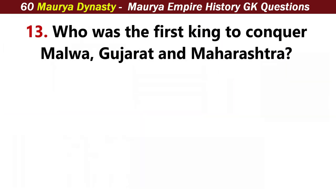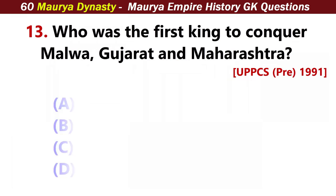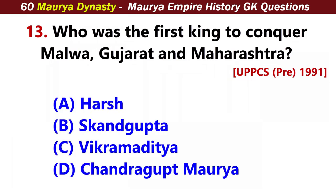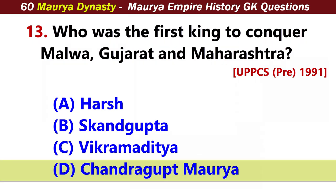Who was the first king to conquer Malwa, Gujarat and Maharashtra? Answer D: Chandragupta Maurya.